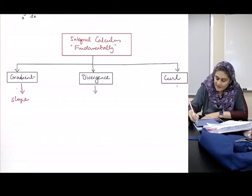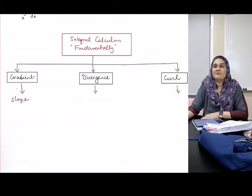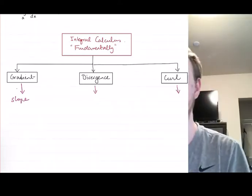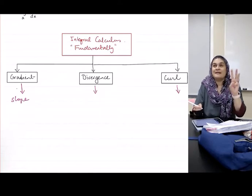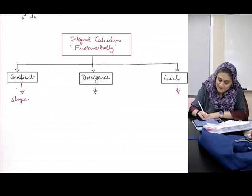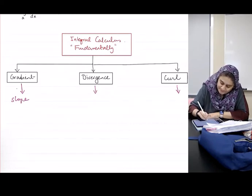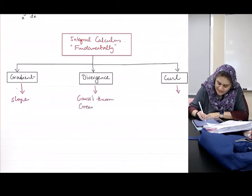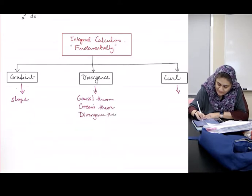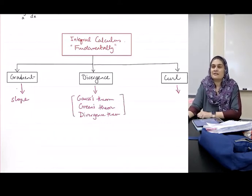And I have to come up with fancy names for this. For divergence, it is so important that it has three different names. It is called the Gauss theorem, the Green's theorem, and the divergence theorem. So it is so important that we have given it three different names.